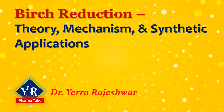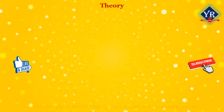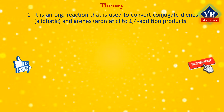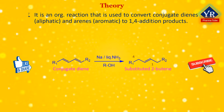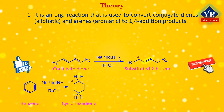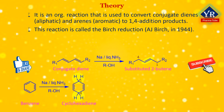In this lesson, we shall learn the theory, mechanism, and synthetic applications of Birch reduction reaction. The Birch reduction is an organic reduction reaction that is used to convert conjugated dienes and arenes to 1,4-addition products. The aliphatic conjugated diene is converted into a substituted 2-butene and an aromatic ring into a cyclohexadiene. The reaction is named after the Australian chemist Arthur J. Birch in 1944.